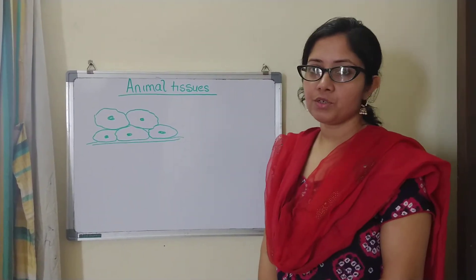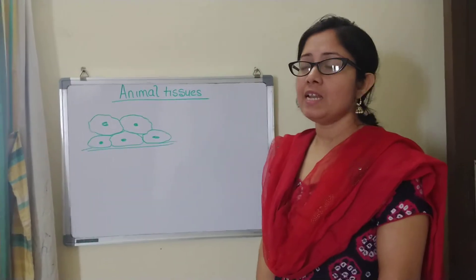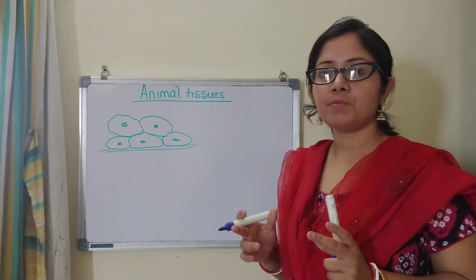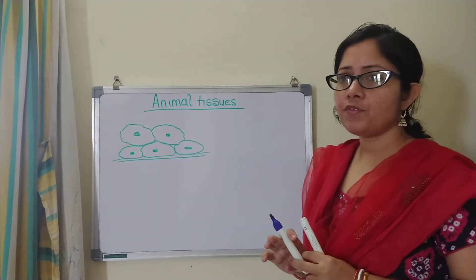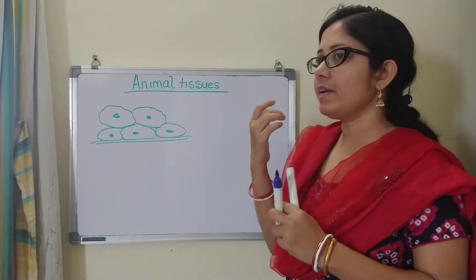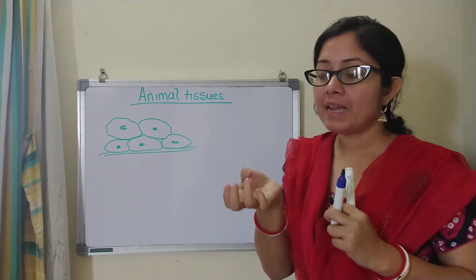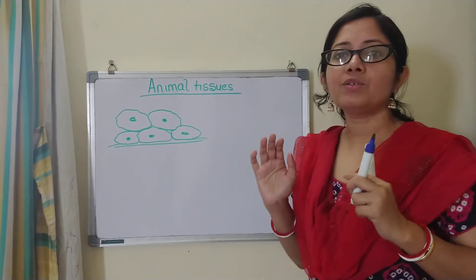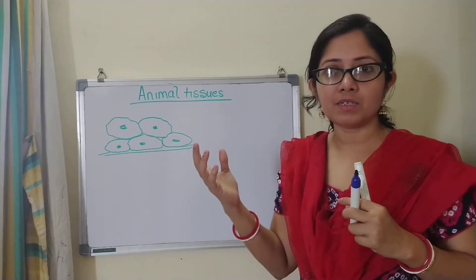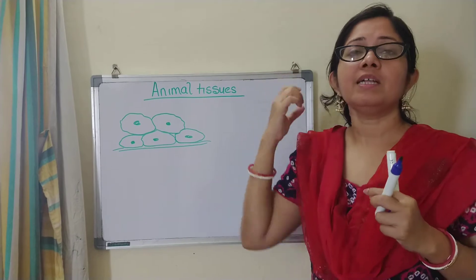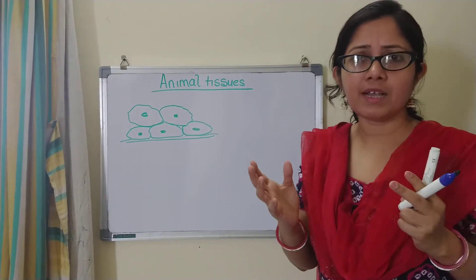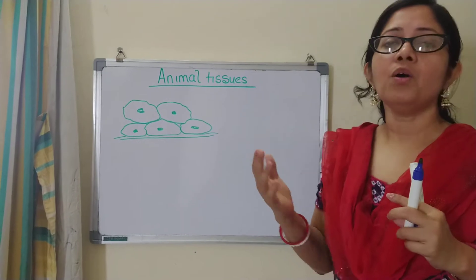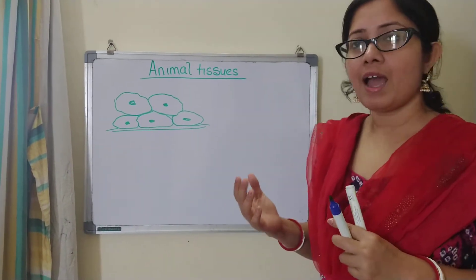Hello children, today we are going to do animal tissues. Animal tissues are like a group of cells that are performing a certain function. For example, the skin, the hair, my nails — all of this are made up of tissues. If you think of animals, they have horns, they have hooves, eyes. So everything is actually made up of cells. We are going to learn about those cells, what is their function, what purpose they are serving.